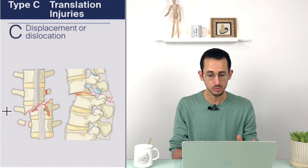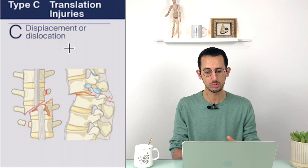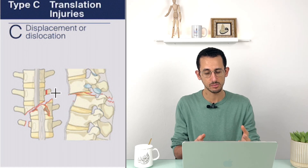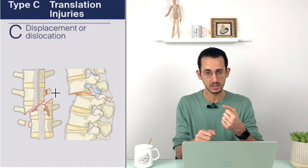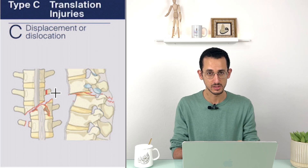Type C is the displacement, translation, or dislocation injury — quite severe, where the spine is completely dislocated out of its place.